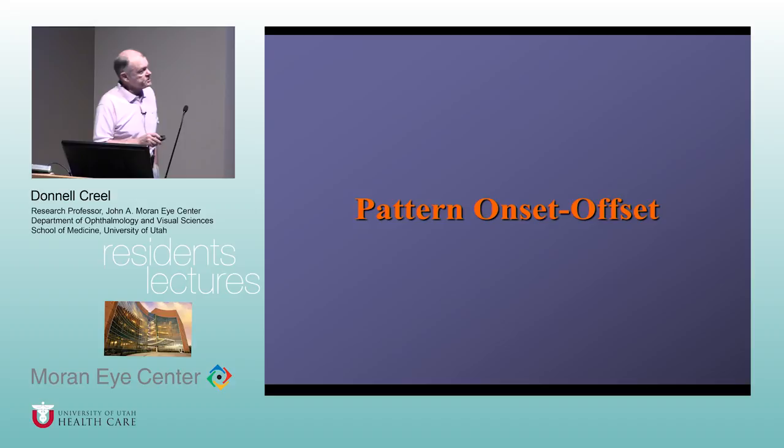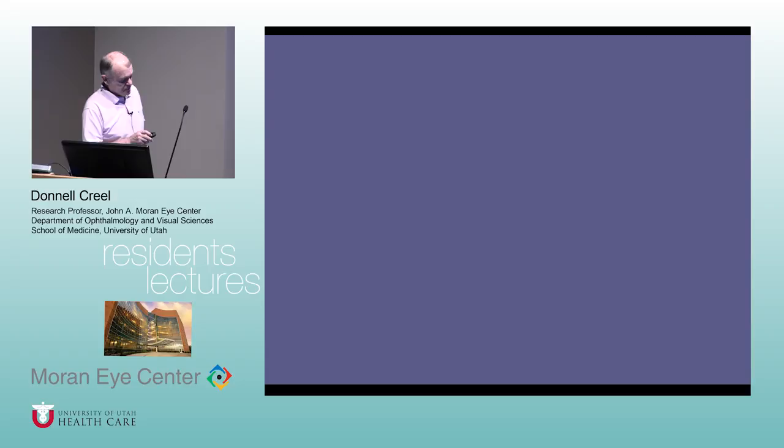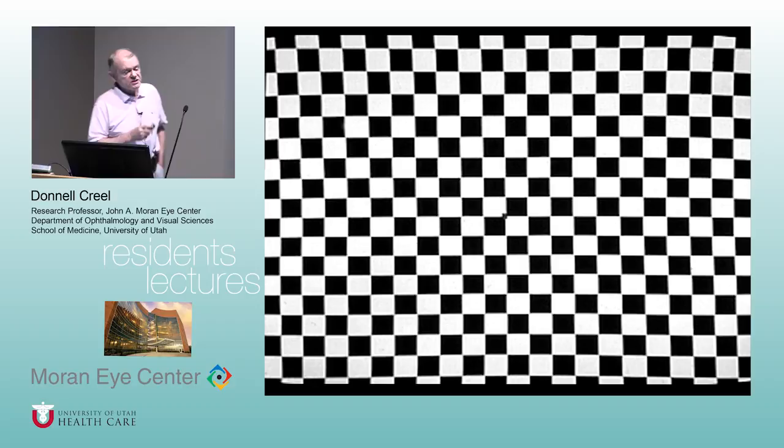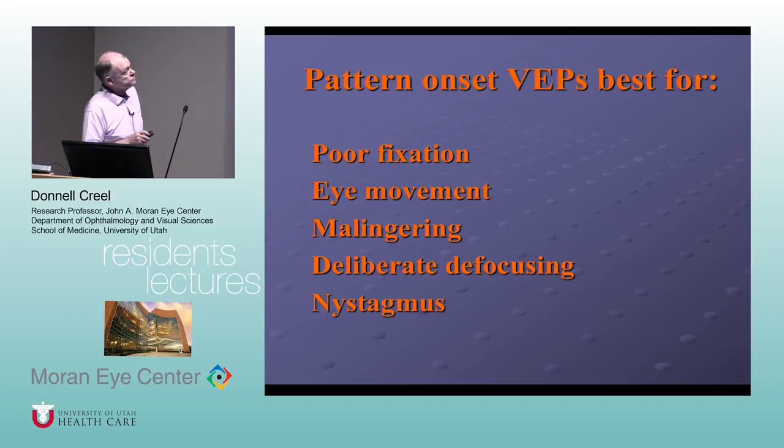The pattern onset/offset response is when a pattern appears, then goes back to gray, appears, goes back to gray. This is the preferred stimulus for any person that has nystagmus as part of their symptoms. The pattern onset visually evoked response is best for poor fixation, eye movement, deliberate defocusing, and nystagmus.